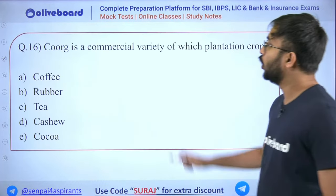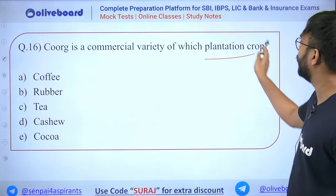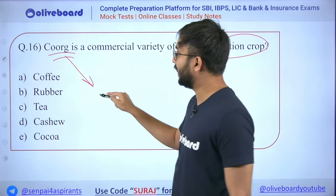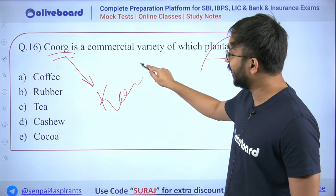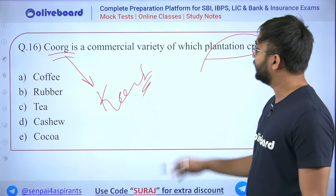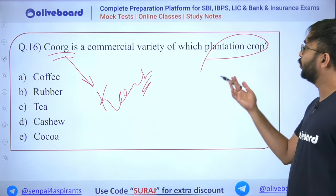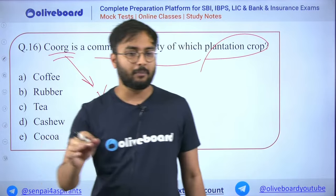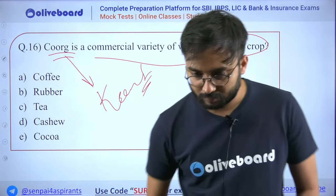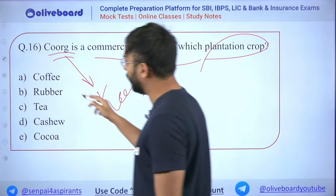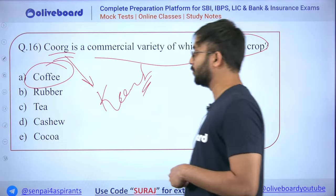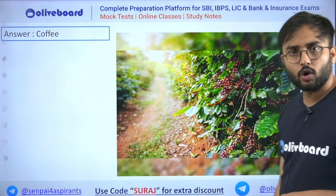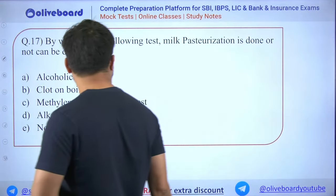Next: Coorg is a commercial variety of which plantation crop? Coorg is located in southern Karnataka. Karnataka is famous for tea and coffee plantation. Coorg is very famous for coffee plantation — the answer is coffee.